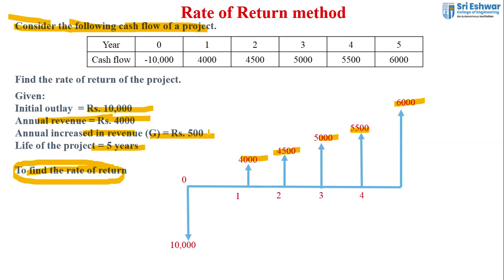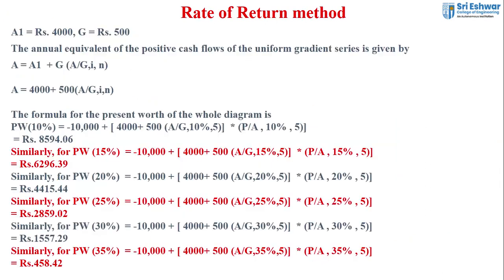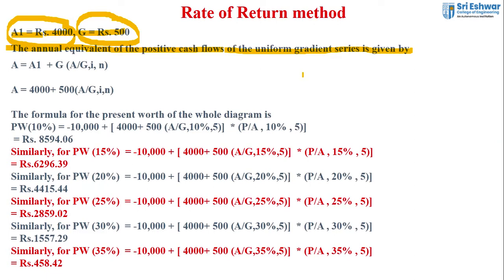We are going to solve for the rate of return of the project. First, we draw the cash flow diagram. Since revenue is given, it is a revenue-dominated cash flow. The given data is: A1 = 4,000 rupees (starting value for first year) and G = 500 (gradient), increasing from 4,000 to 4,500, 5,000, 5,500, and 6,000. The formula for annual equivalent of the positive cash flow with uniform gradient series is A = A1 + G × (A/G, i, N). The present worth formula is: PW(10%) = minus 10,000 + [4,000 + 500 × (A/G, 10%, 5)] × (P/A, 10%, 5).